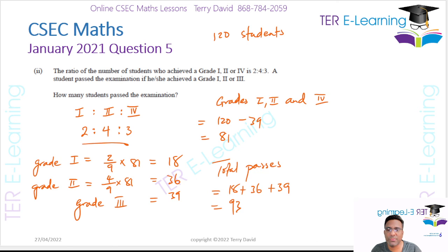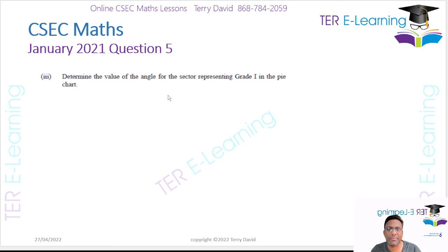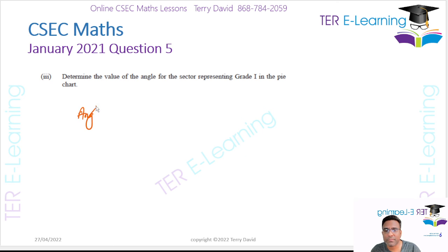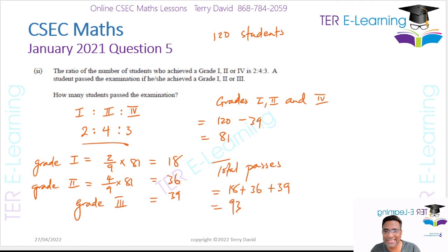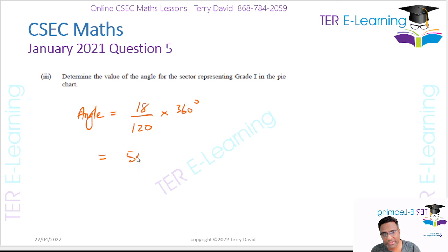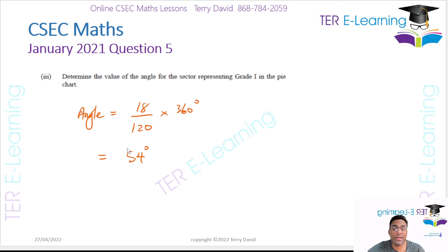We still have one more part: determine the angle for the sector representing grade 1 on the pie chart. We know 18 students got grade 1. The angle is simply 18 over 120 multiplied by 360 degrees, which gives an angle of 54 degrees. So that's the angle for grade 1. Please hit like and subscribe, feel free to share the videos. Take care guys.